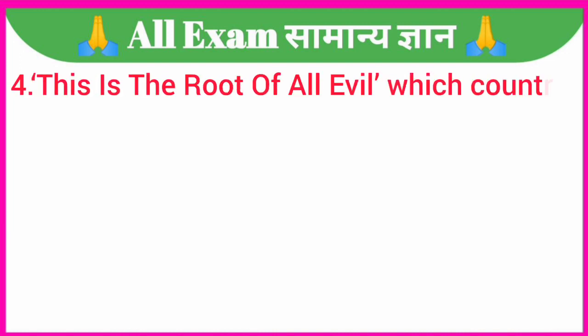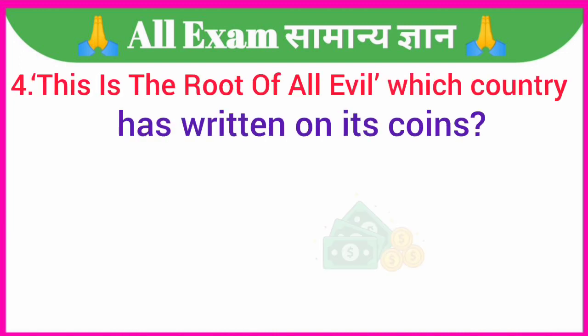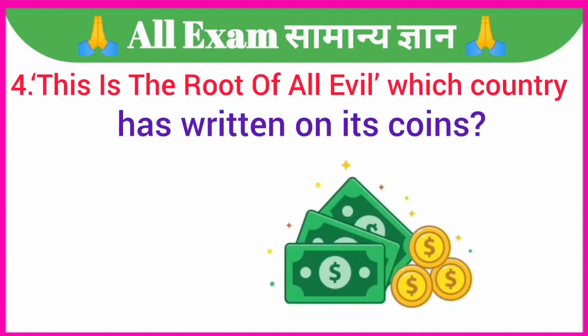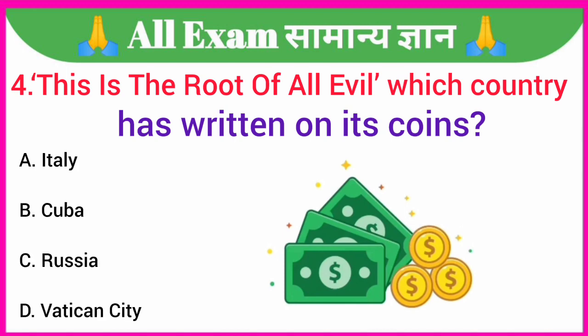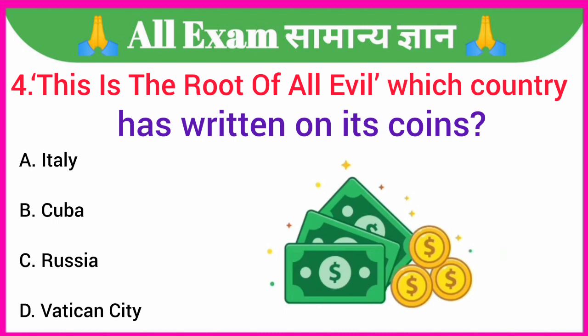'This is the root of all evil' — which country has written this on its coins? A. Italy, B. Cuba, C. Russia, D. Vatican City. Your correct answer is option D. Vatican City.